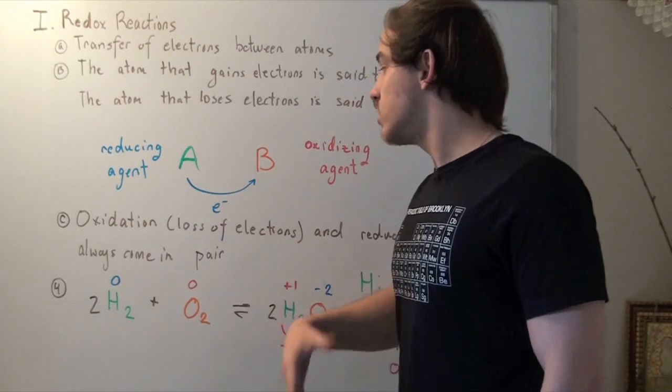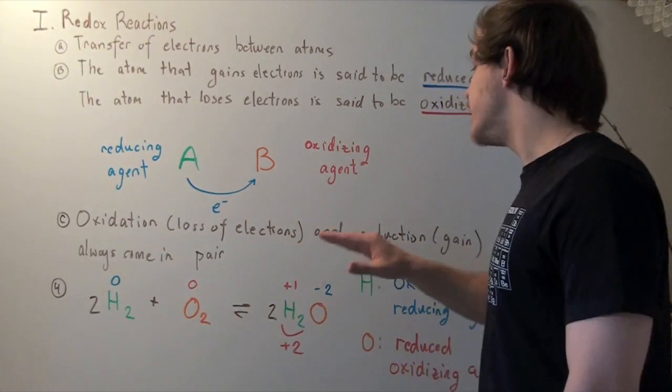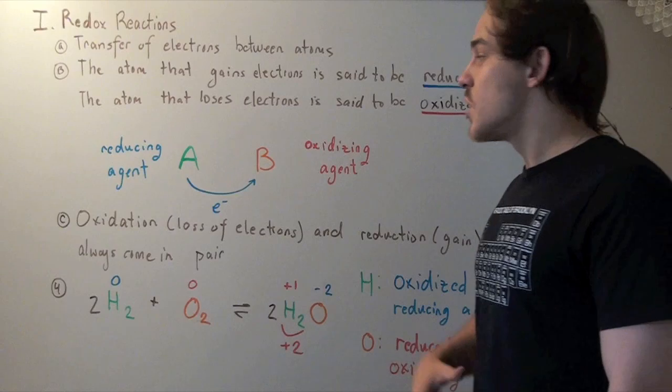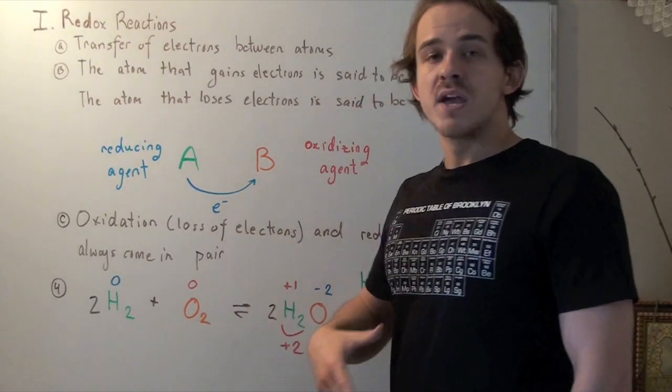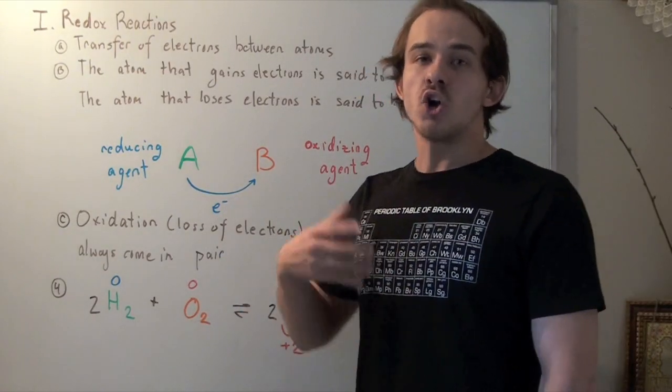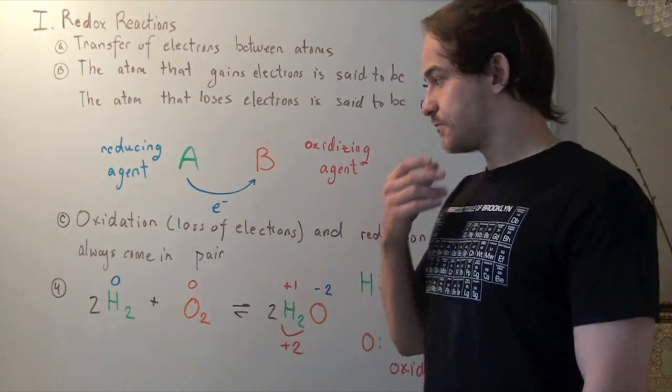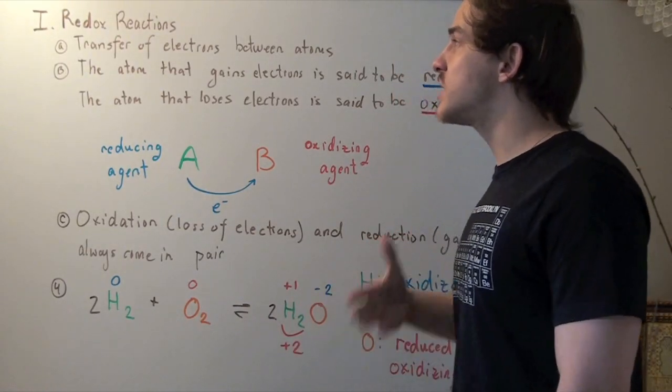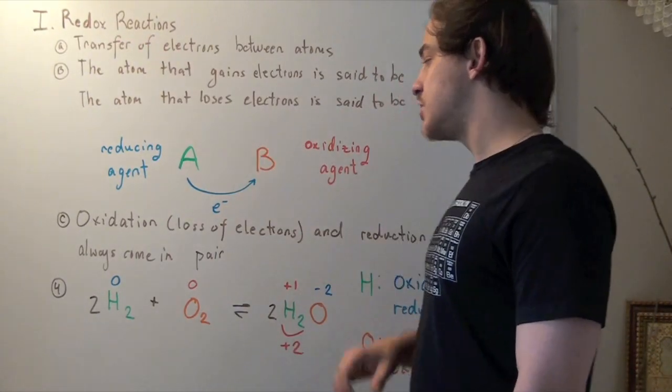So oxidation, or the loss of electrons, and reduction, or the gain of electrons, always come in a pair, the same way that acids are always paired with a base. So let's look at the most common redox reaction out there.